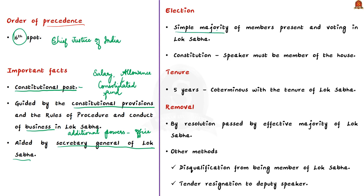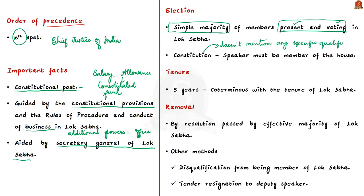Electing the Speaker is one of the first acts performed by the newly constituted house. The Speaker is elected by a simple majority of members present and voting in the Lok Sabha — note the phrase 'present and voting.' The Constitution does not mention any special qualifications for a person to be appointed as Speaker; it simply states the Speaker must be a member of the house.